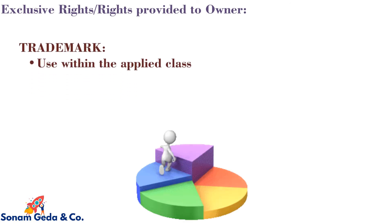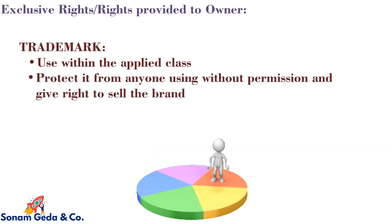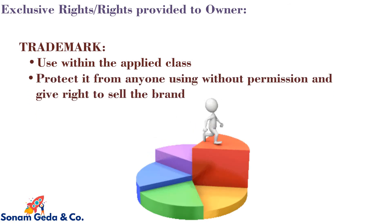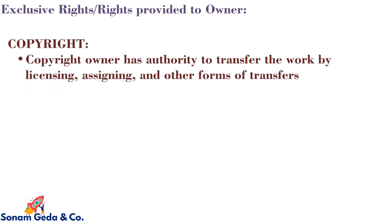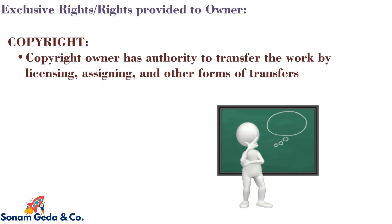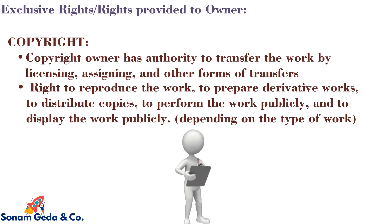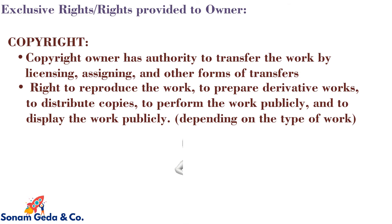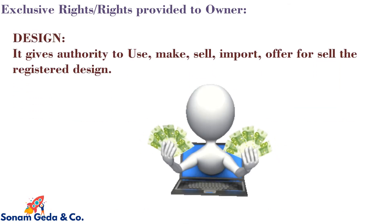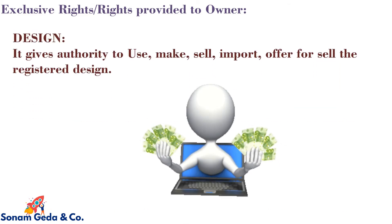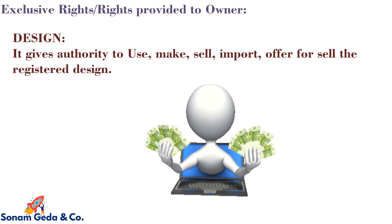Exclusive rights provided to the owner: In case of trademark, use within the applied class and protect it from anyone using without permission, and give right to sell the brand. In case of copyright, the copyright owner has the authority to transfer the work by licensing, assigning, and other forms of transfer — rights to reproduce the work, to prepare derivative work, to distribute copies, to perform the work publicly and to display the work publicly depending on the type of work. In case of design, it gives authority to use, make, sell, import, or offer for sale the registered design.